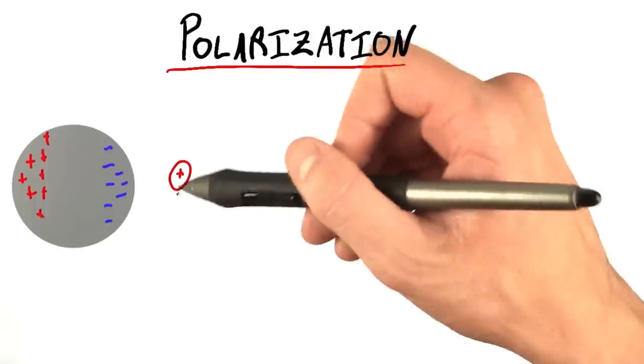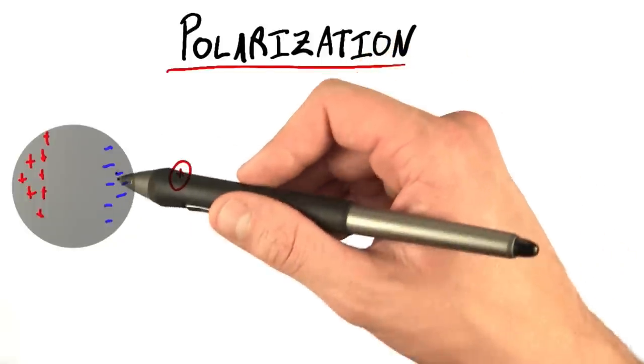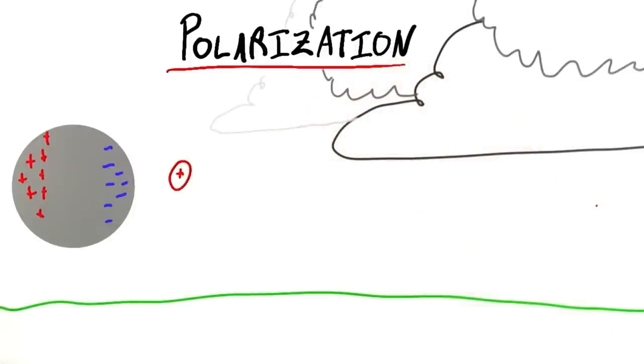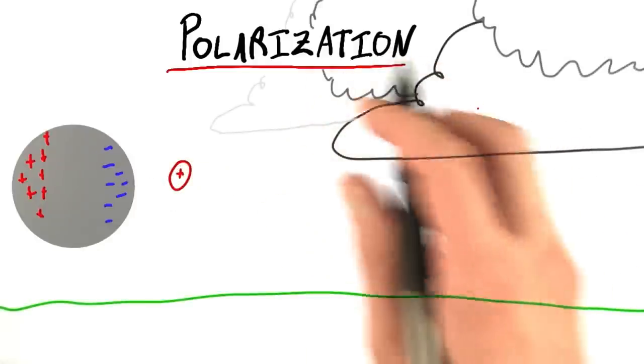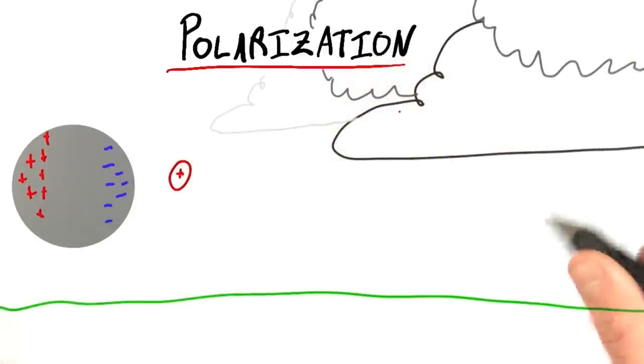At the heart of polarization, we have a charge attracting opposite charges. In fact, something very similar happens when a lightning cloud comes overhead.